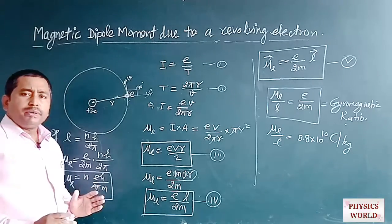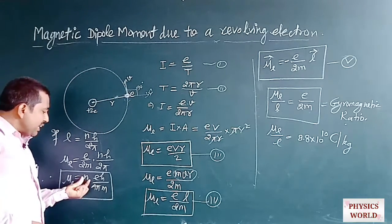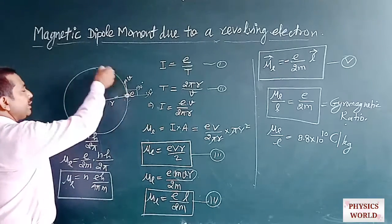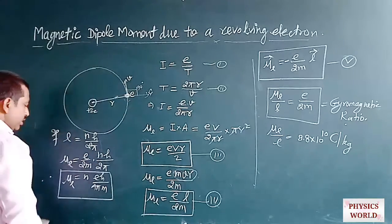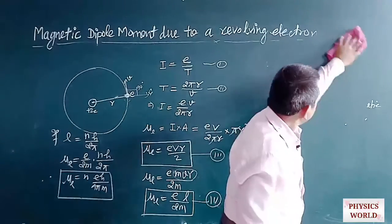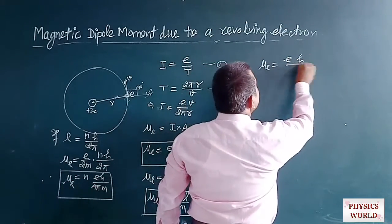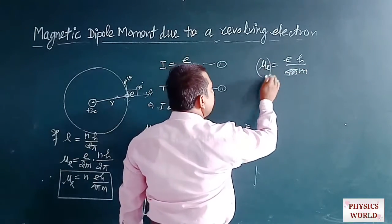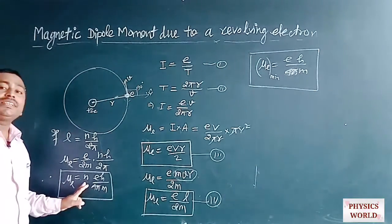To find the minimum magnetic dipole moment, we set n = 1, representing the electron in the first orbit. This gives μL(min) = EH / (4πm). This is the minimum value because all other values of n are greater than 1.